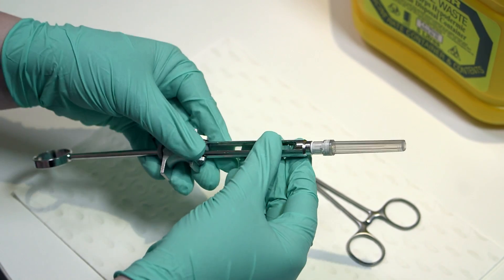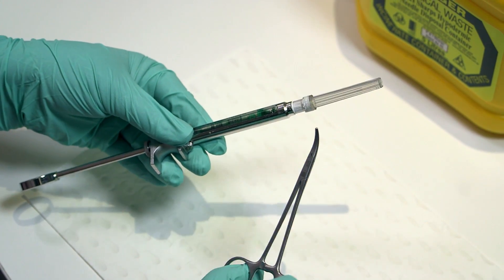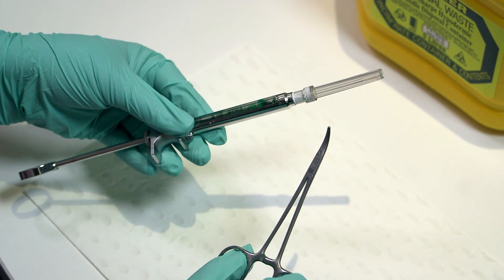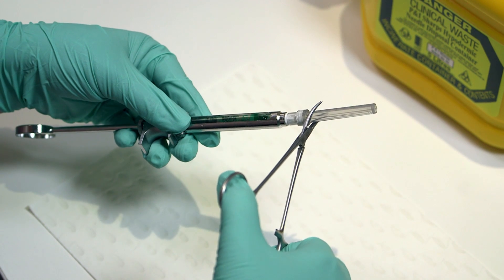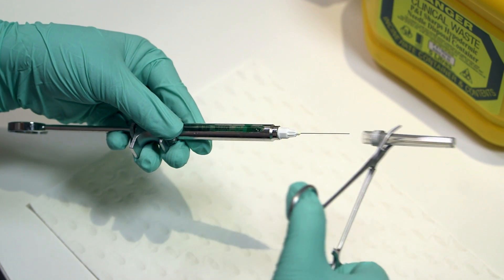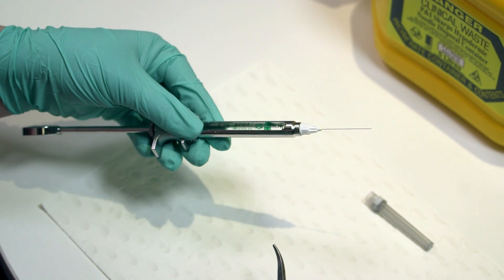Now when we go to use it with our patient, we need to use our forceps to remove the lid. We never use our fingers to remove the lid. So very carefully we place the forceps over, give it a little jiggle, and that will remove it ready for us to use the local anaesthetic on our patient.